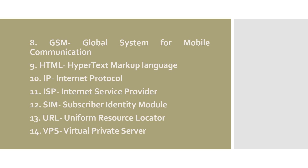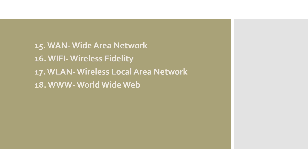GSM: Global System for Mobile Communication. HTML: Hypertext Markup Language. IP: Internet Protocol. ISP: Internet Service Provider. SIM: Subscriber Identity Module. URL: Uniform Resource Locator. VPS: Virtual Private Server. WAN: Wide Area Network. Wi-Fi: Wireless Fidelity. WLAN: Wireless Local Area Network. And finally, WWW — which is commonly used — stands for World Wide Web.